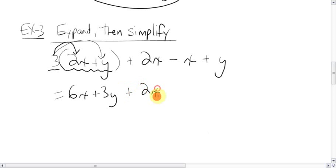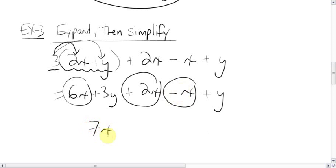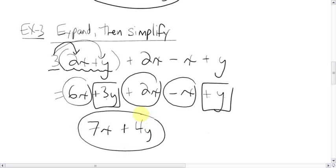And then we bring everybody else down. Plus 2x minus x plus y. What do you think we do next? Well, from this point, it's now good old circles and squares. Circle, circle, circle. 8x. 6 plus 2 is 8x minus 1x is 7x. And with the y, let's put squares around them. 3y plus 1y is 4y. Positive 4y, so you put a plus in between. And that's it. 7x plus 4y.